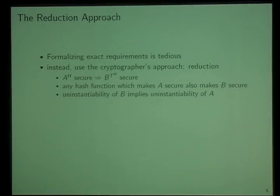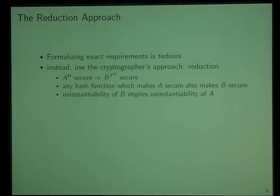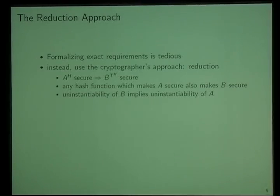Instead, what we propose here is the standard cryptographer's approach — we want to use a reduction. We want to be able to make statements such as: if scheme A, given access to random oracle H, is secure, then scheme B is secure using the very same random oracle. Intuitively, any hash function that makes scheme A secure also makes scheme B secure. And from this it follows that if the random oracle of scheme B is uninstantiable, then the random oracle of scheme A is uninstantiable as well.